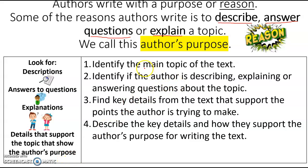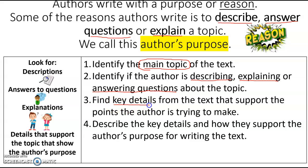We'll start by identifying the main topic. We have to know what the text is all about before we can figure out why it was written. Then we'll look at whether the author is describing, explaining, or answering questions. Then we'll look for those key details that support the points the author is trying to make.